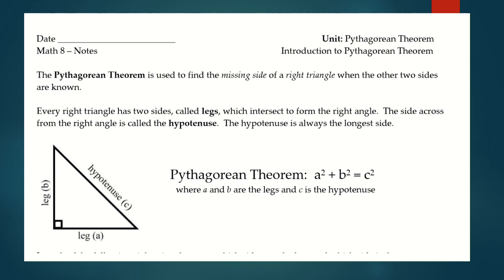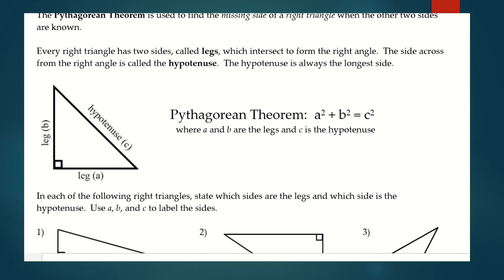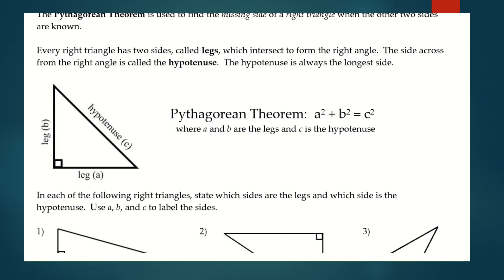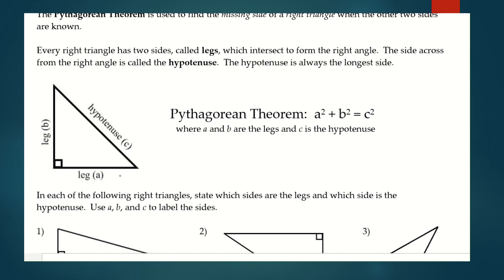Every right triangle has two sides called legs, which intersect to form a right angle. Looking at our triangle in our notes, you can see leg A and leg B, and when they intersect they form a right angle. The side across from the right angle is called the hypotenuse, and the hypotenuse is always the longest side. Pythagoras's theorem is A² + B² = C², where A and B represent the length of the legs and C represents the hypotenuse.